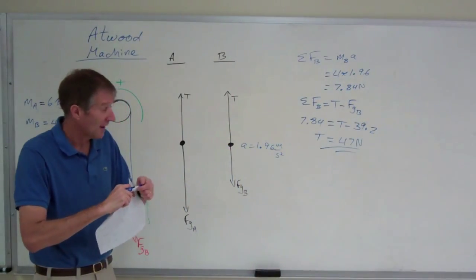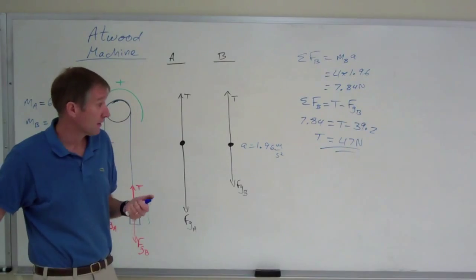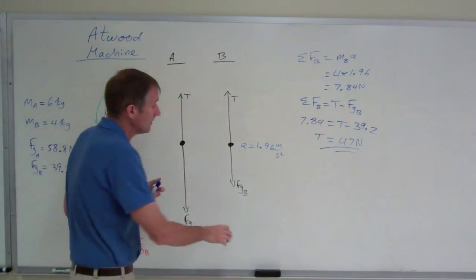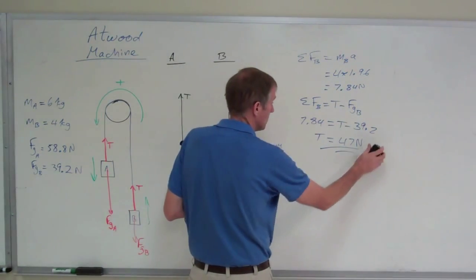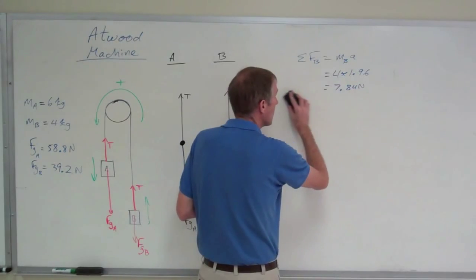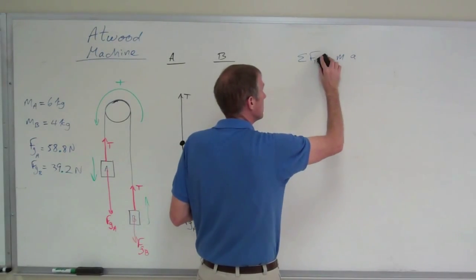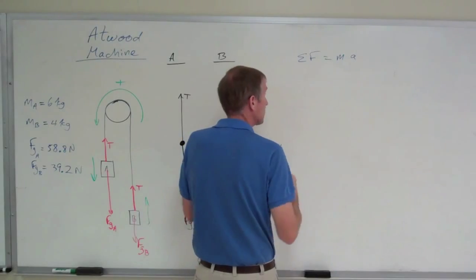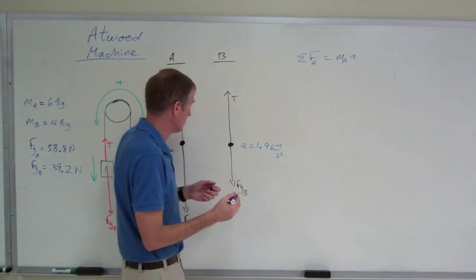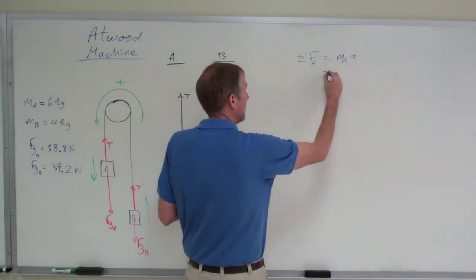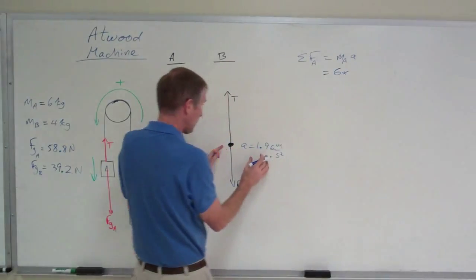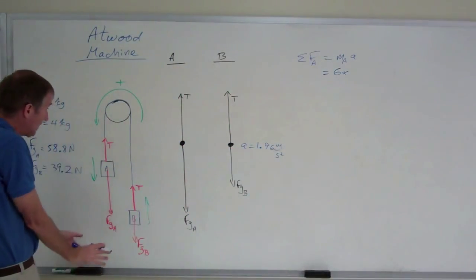That's one way to do it, and that I think is the easier way. The other way to do it that I want to show you real quick is you could look at block A, you just got to be real careful. So 47 newtons. If you look at block A, so the net force acting on block A equals the mass of block A times the acceleration. Well, block A has a mass of 6 kilograms, times the same acceleration, 1.96 meters per second squared, but it's accelerating downwards.